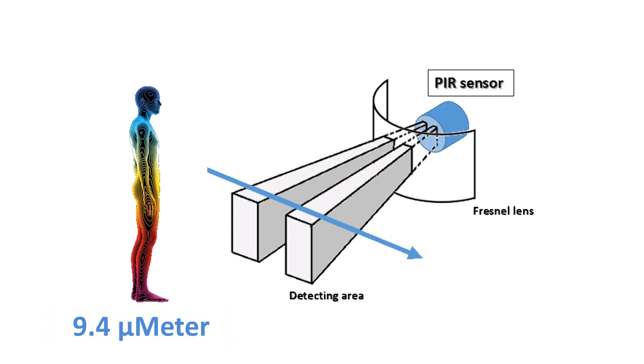9.4 micrometer infrared rays can easily pass through this polyethylene cover. The sensor's sensitivity ranges from 6 to 7 meters, and the detection angle is 110 degrees by 70 degrees.